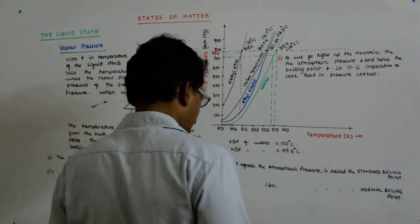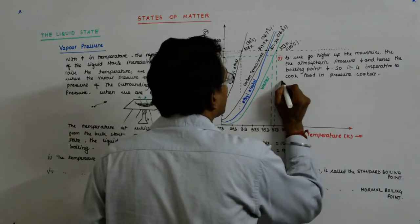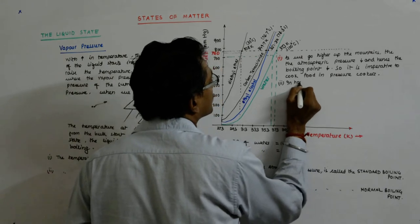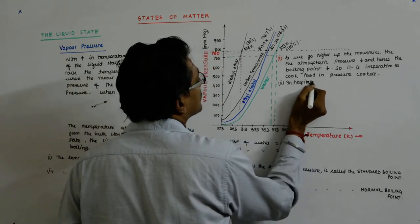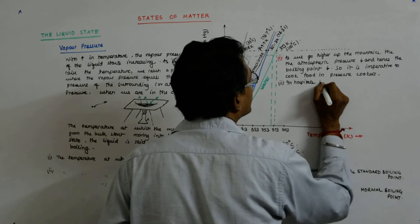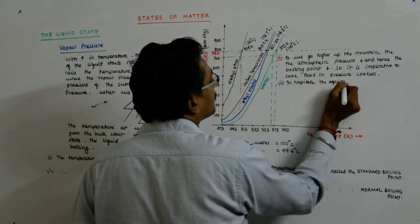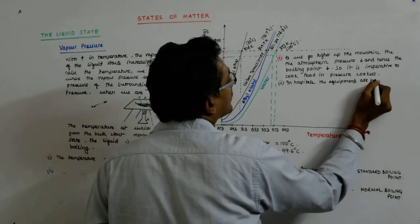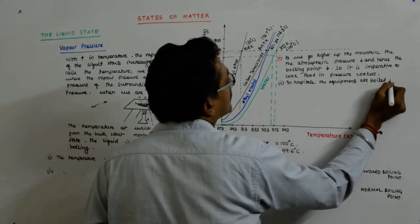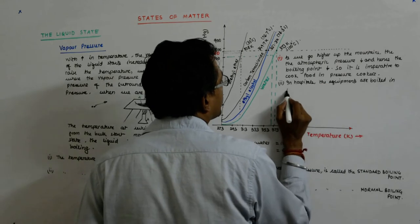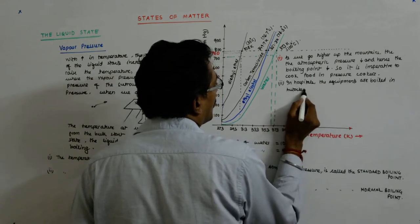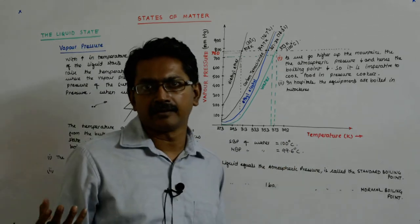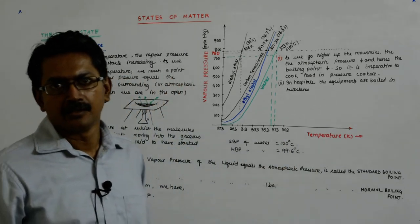The next implication is that in hospitals, equipment is boiled in autoclaves. Autoclaves are like pressure cookers, so the pressure is higher, so the boiling point is high.